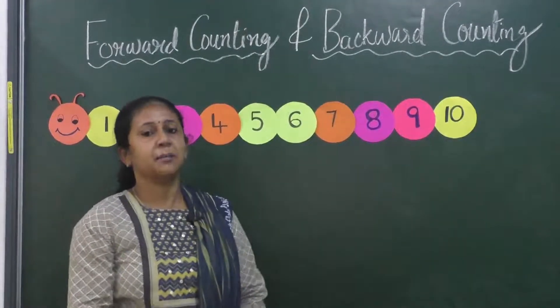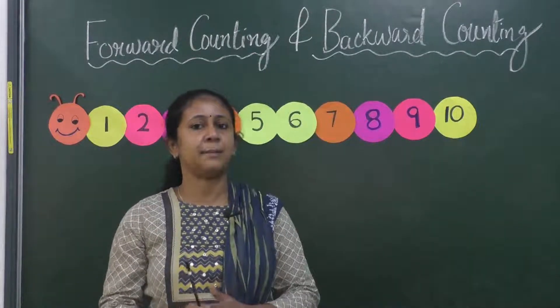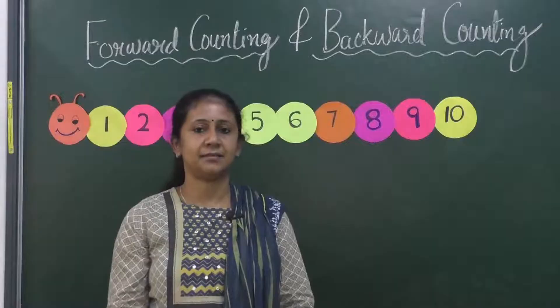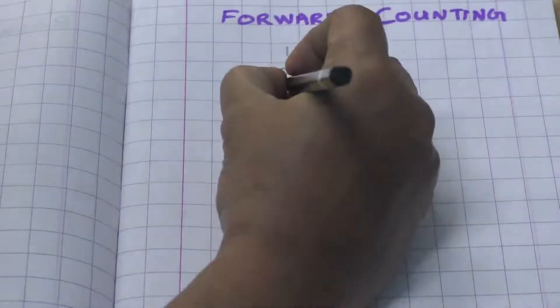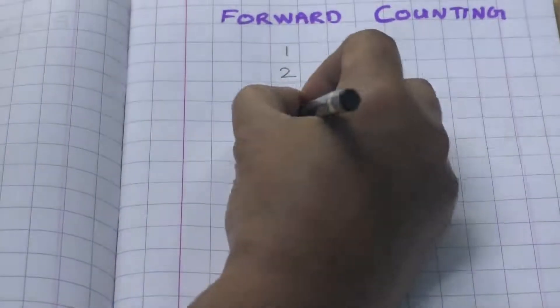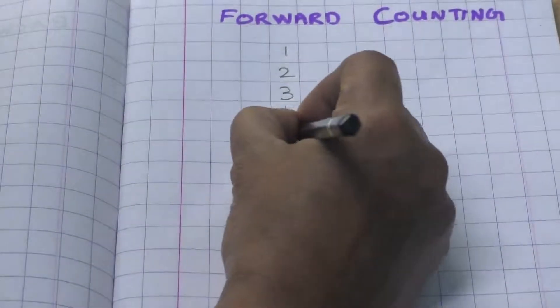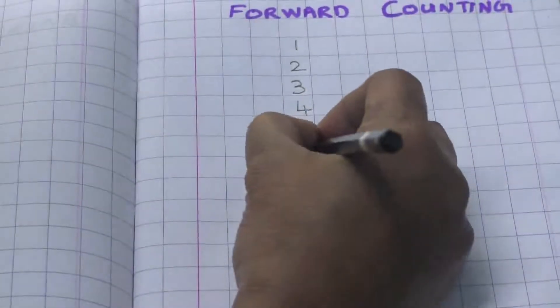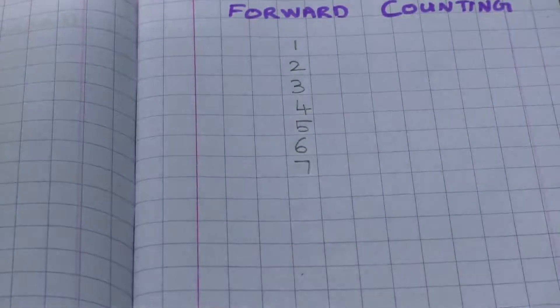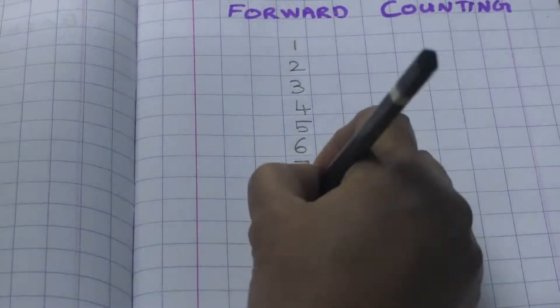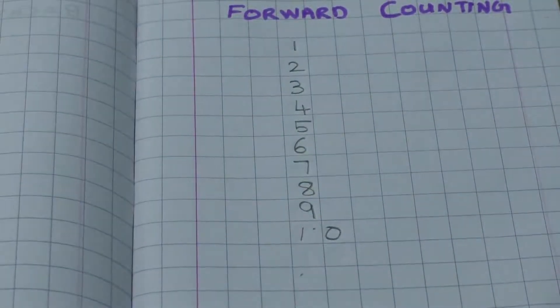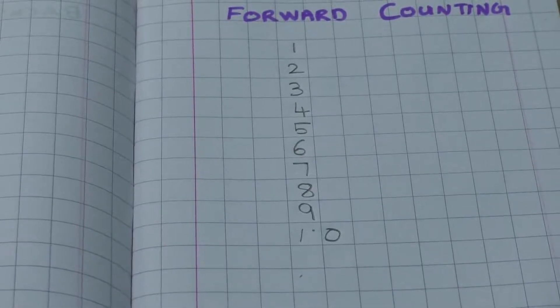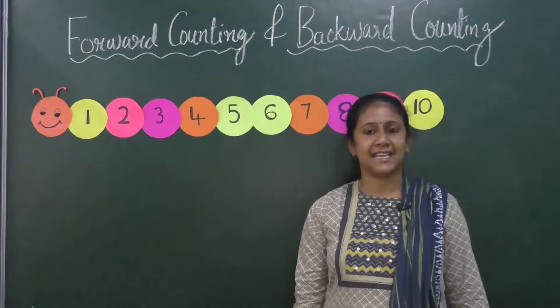Forward counting means we will count from small numbers to big numbers. Now let's write the numbers — you have to say and write: 1, 2, 3, 4, 5, 6, 7, 8, 9, 10. This is forward counting.